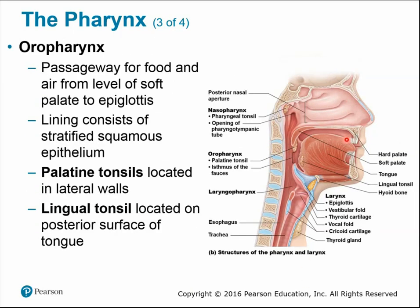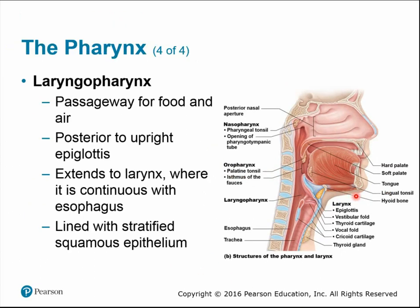The oropharynx is a passageway for both food and air — food from the mouth as well as inhaled air. It runs from the soft palate to the epiglottis and consists of stratified squamous epithelium, more like the lining of the mouth. It also contains the palatine tonsils and lingual tonsils. The laryngopharynx is also a passageway for food and air, posterior to the epiglottis and extending to the larynx, where it continues to the esophagus — also lined with stratified squamous epithelium.